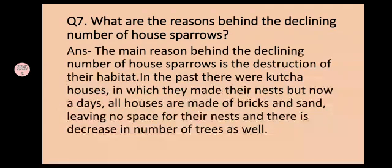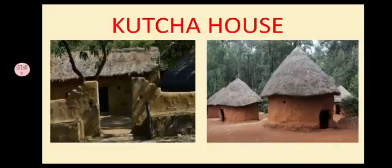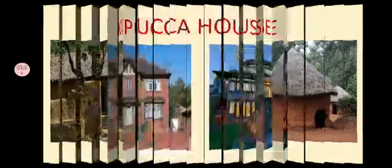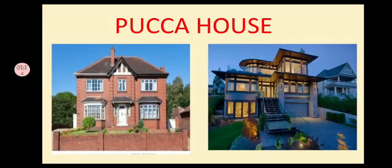There is also a decrease in the number of trees. Kids, see this picture — you can easily guess that kachya houses were an easy option for the house sparrow to build their nest, as compared to paka houses.